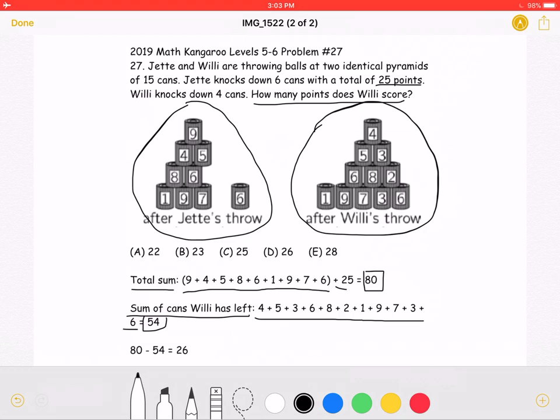Because we are looking for the amount of points Willie scores, we can take 80, the total sum of all the cans, subtract 54, the sum of the cans Willie has left, and get a total of 26. Willie has scored 26 points. This is answer choice D. Thank you so much for watching.